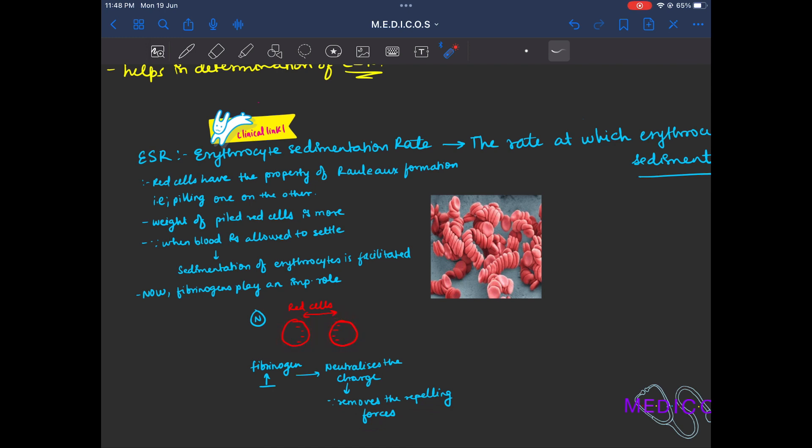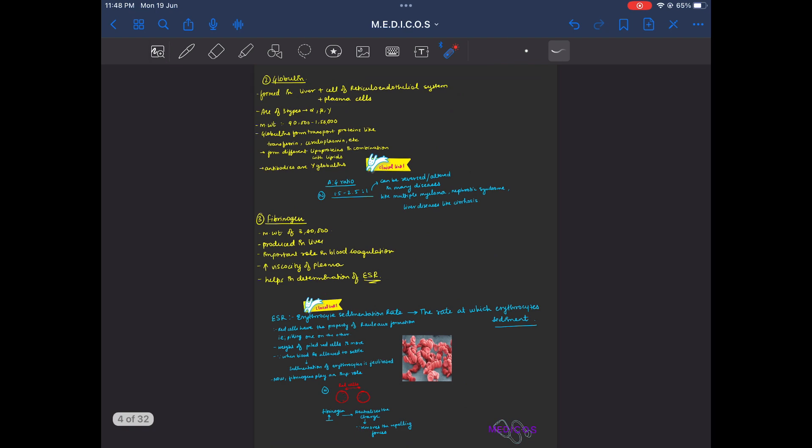What is rouleaux formation? Piling of one RBC on another. The weight of the piled red cell is more. This is why when blood is allowed to settle, sedimentation of erythrocytes is facilitated. How will fibrinogen play a role? By neutralizing the negative charge.